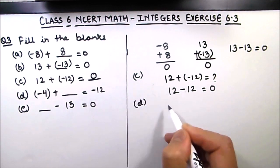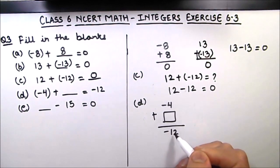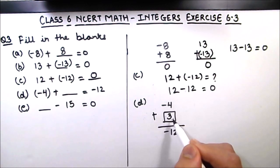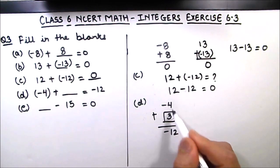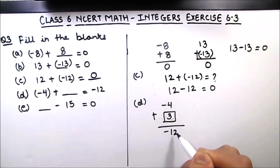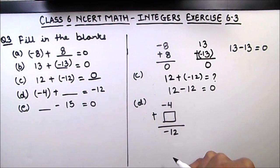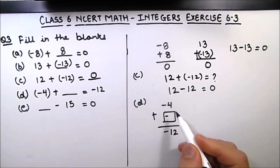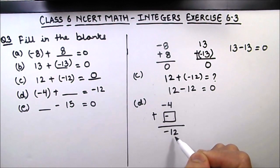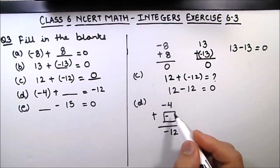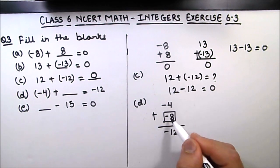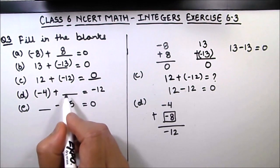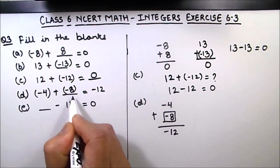Part D is: minus 4 plus what number will give you minus 12. If we take a positive number, say 3, then minus 4 plus 3 means the two numbers get subtracted and we won't get a bigger value, so we should not use a positive number. We need a negative number. Negative 4 plus what gives us 12 in value? Since 4 plus 8 equals 12, and both numbers are negative, the result is negative. So the fourth blank is negative 8.